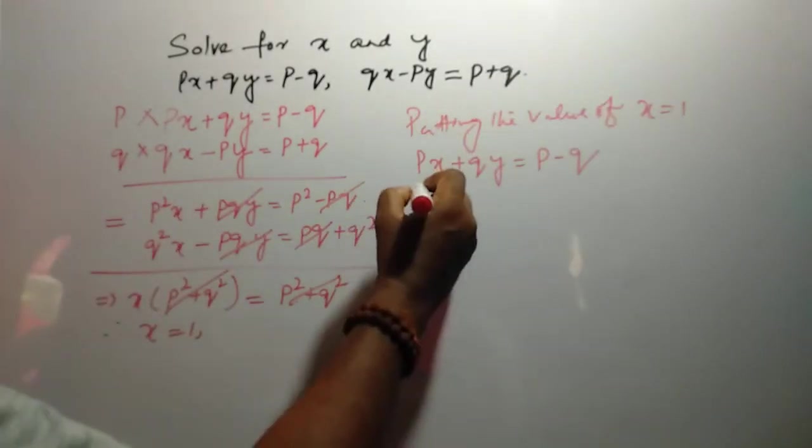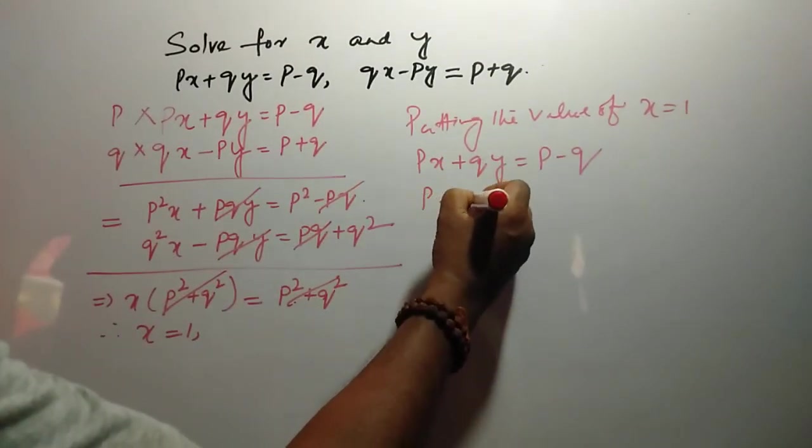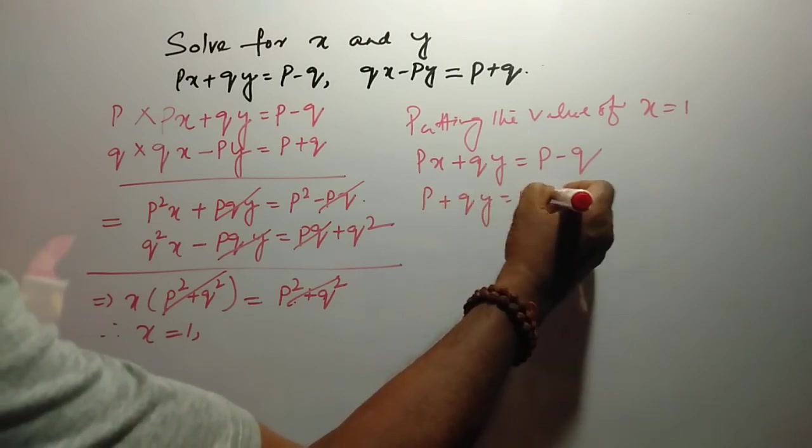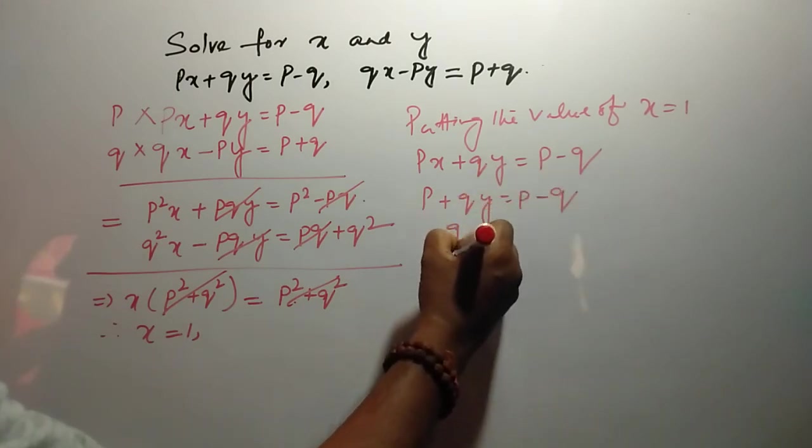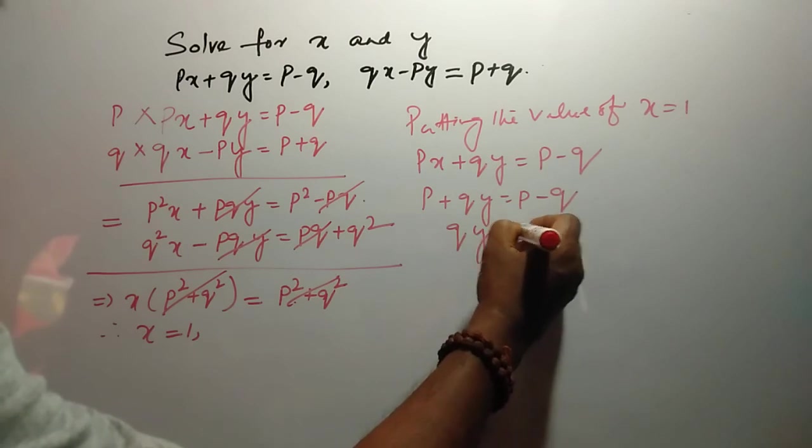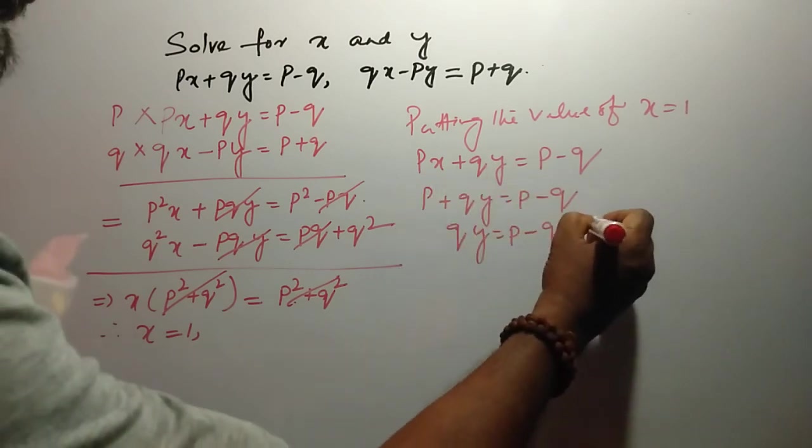So, X is 1 here. So, P plus QY is equal to P minus Q. QY is equal to P minus Q minus P is there.